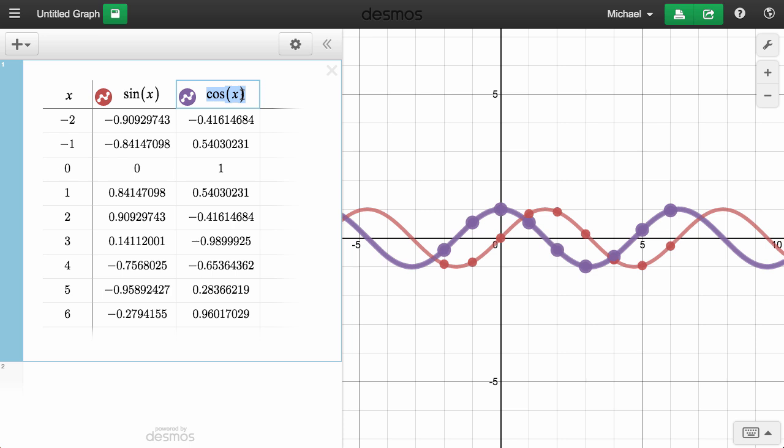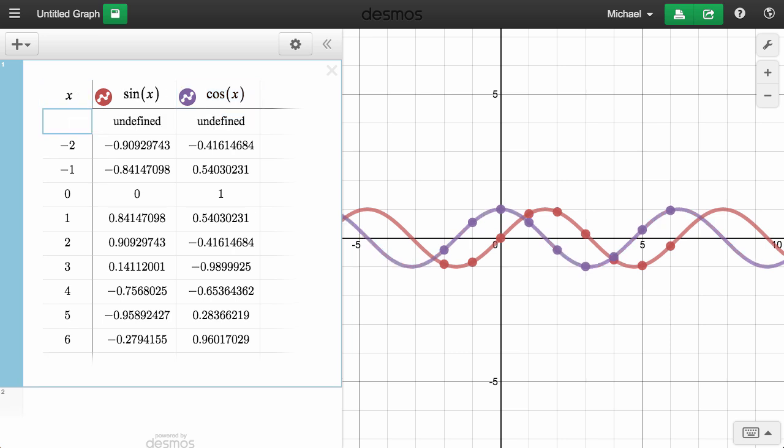One last thing, if you'd like to add entries to the top of the table, just click where the x is and press Enter. The rest of the values will shift down, giving you room for a new x value at the top.